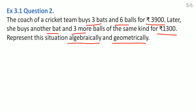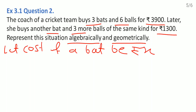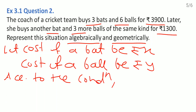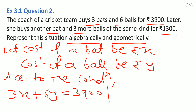We don't know the cost of a bat and a ball. So let the cost of a bat be Rs. x and the cost of a ball be Rs. y. Then according to the conditions: in the first condition, she purchased 3 bats and 6 balls and the total cost is Rs. 3900. In the second situation, she purchased 1 bat and 3 balls and the cost is Rs. 1300.